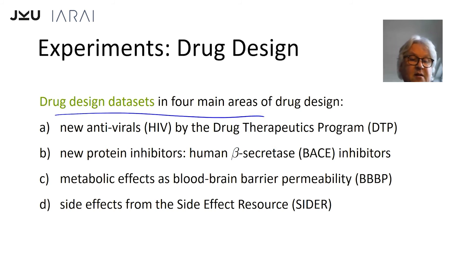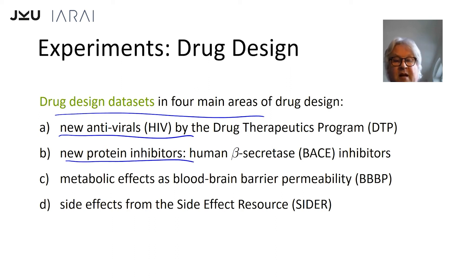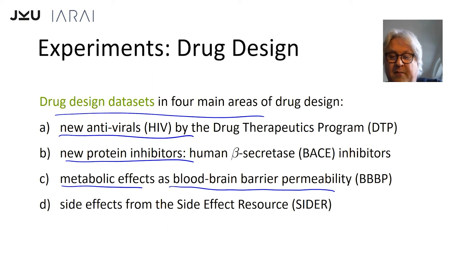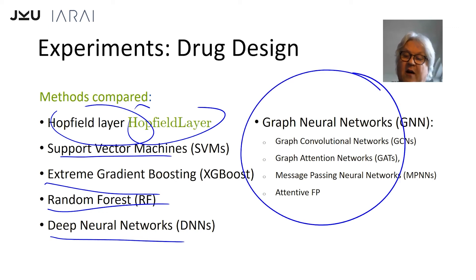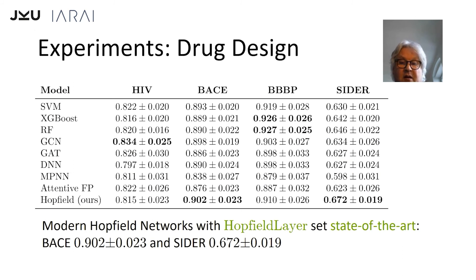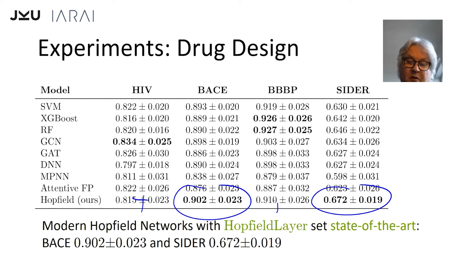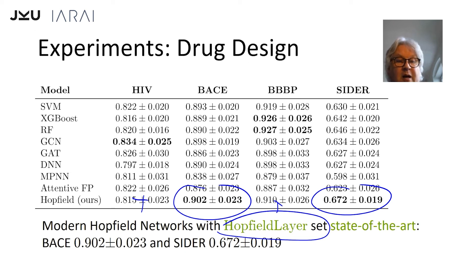Our last set of experiments is on drug design. There are four drug design categories: new antivirals, new protein inhibitors like human beta-secretase, metabolic effects such as blood-brain barrier permeability, and side effects — does a drug candidate have a side effect? We compared our Hopfield network with support vector machines, XGBoost, random forests, various deep neural networks, and graph neural networks — which were recently shown to perform very well on molecules. In two out of the four benchmark datasets we achieve a new state of the art, and for the other two we perform very well.